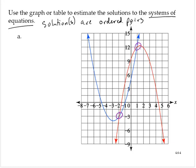And so then just reading the coordinates, I would say that the solutions of this system of equations are (-2, -3) and (1, 12).